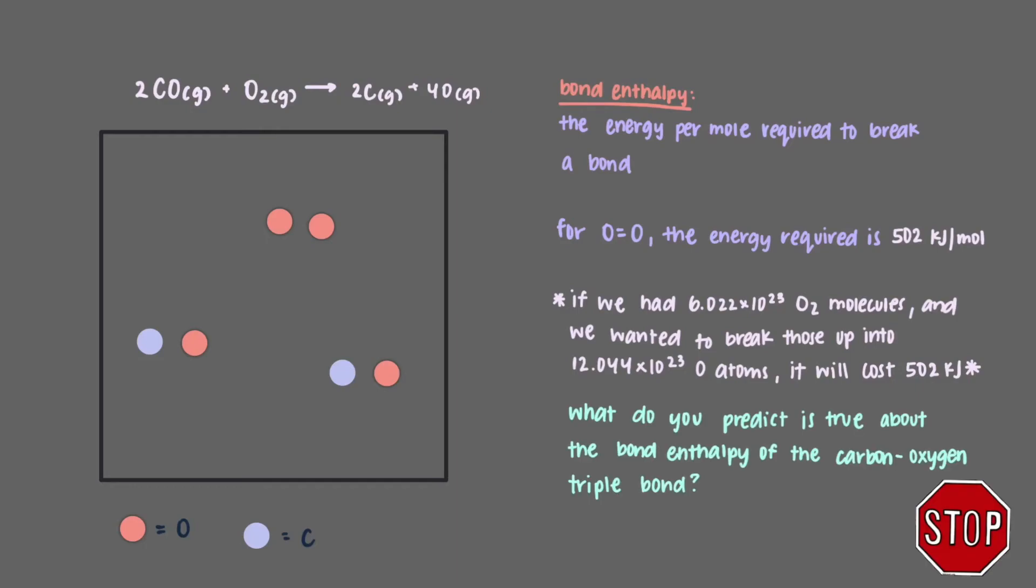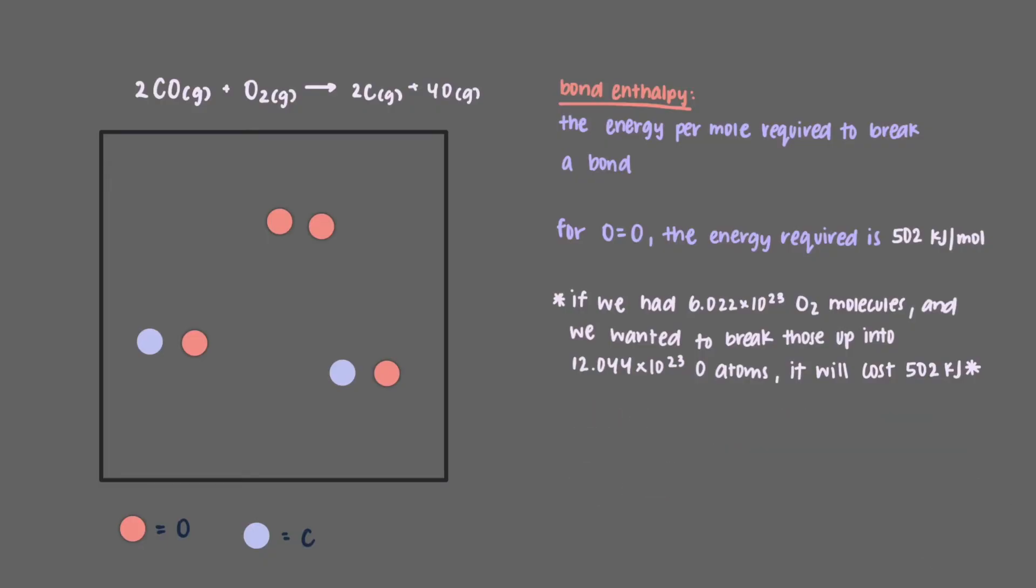What do you predict is true about the bond enthalpy of the carbon-oxygen triple bond? Triple bonds are stronger than double bonds, so we expect it to cost more energy to break apart one mole of carbon-oxygen bonds.